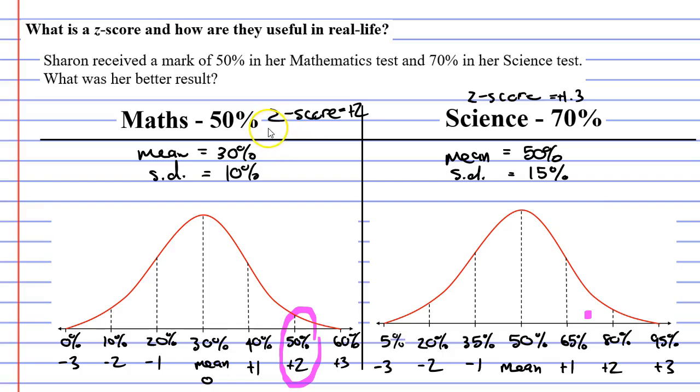Now, when we look at the tests, we can see that the maths test has a higher Z-score. So, Sharon got a better result in her maths test. Z-scores are really useful when you want to make comparisons like this one.